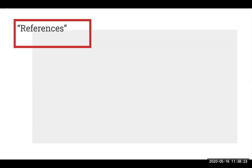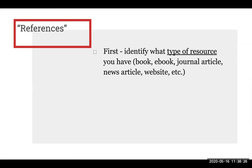So how do we create these individual references? The first step is to identify what type of resource you are using — in other words, identify whether what you are citing is a book, an e-book, a journal article, a news article, a website, or even a movie, a podcast, or a tweet.